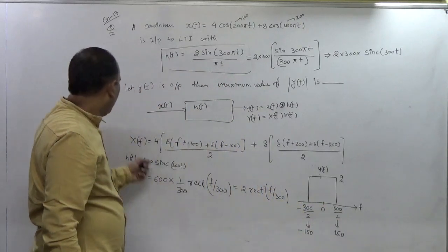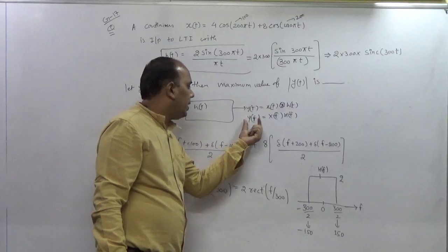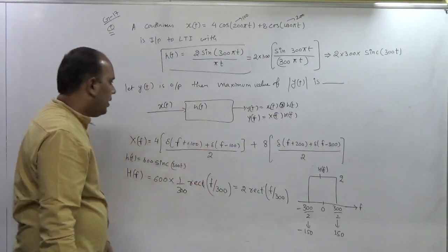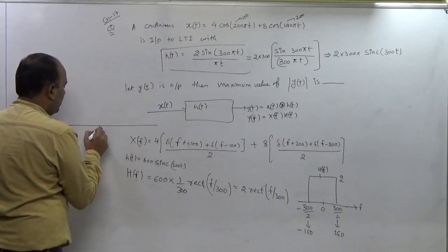And for getting the output we should multiply Xf and Hf. So just denote the Xf also. This is 0, and Xf has a band at 100.